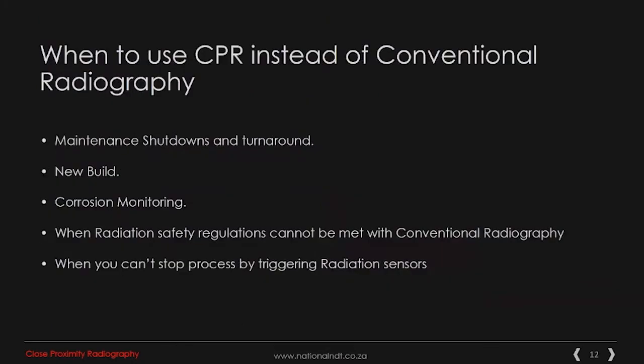When would you use CPR instead of conventional radiography? There are five primary areas: one, maintenance shutdowns and turnarounds; two, new build programs; three, corrosion monitoring; four, when radiation safety regulations cannot be safely met with conventional radiography; and five, when you can't stop a process by triggering radiation sensors.